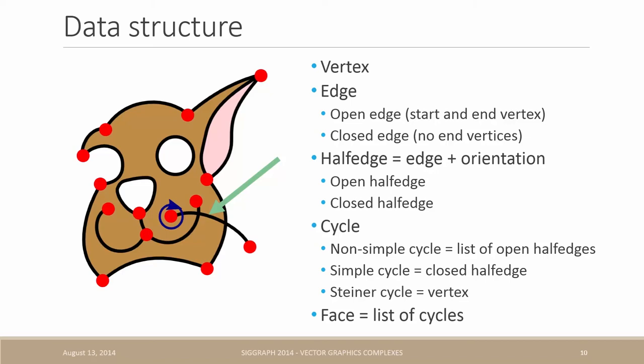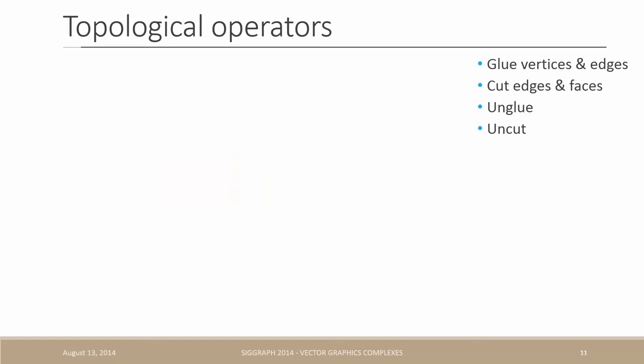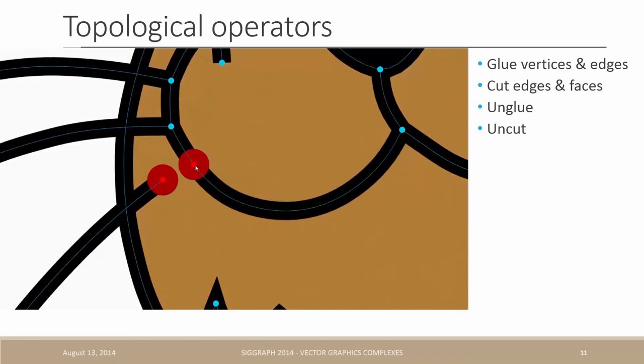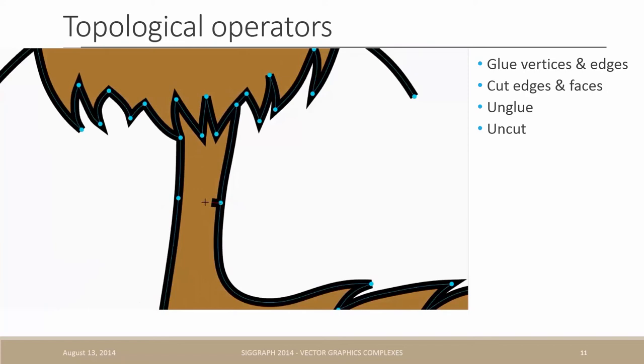Now that we have a representation for the topology, let's talk about how to edit it. We introduce a canonical set of topological operators which are glue vertices and edges, cut edges and faces, and their inverse unglue and uncut. We show here the results of gluing two vertices, cutting an edge, cutting a face, and finally unglueing a selection of vertices and edges.